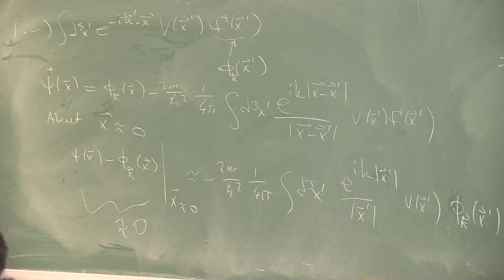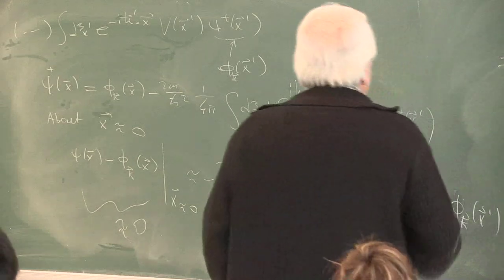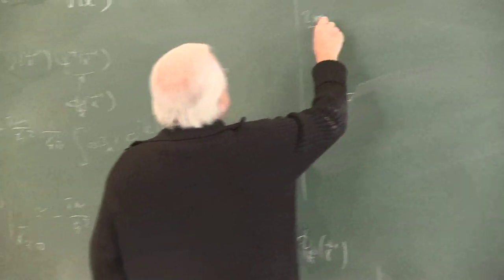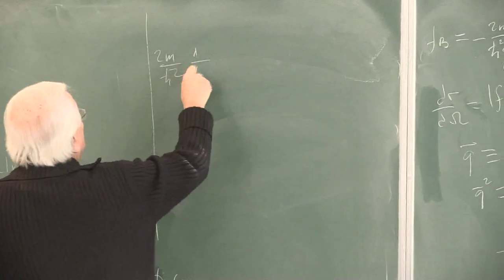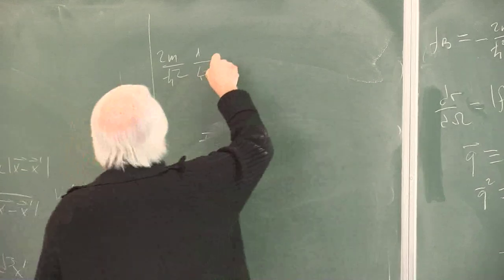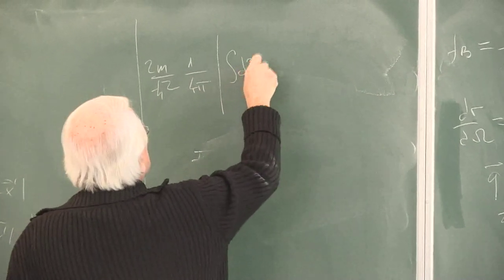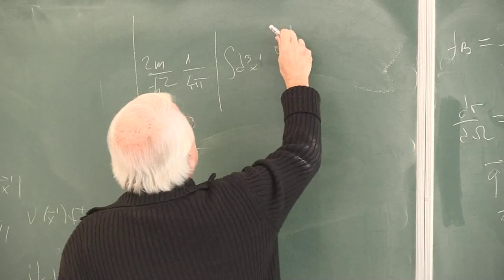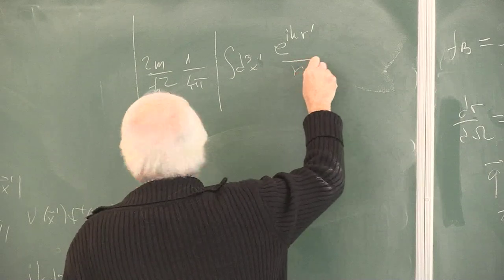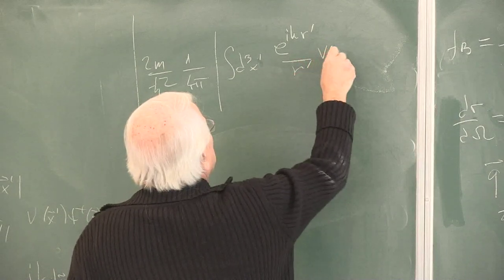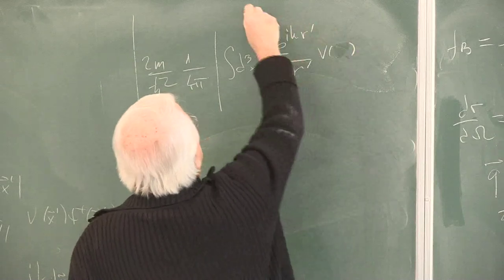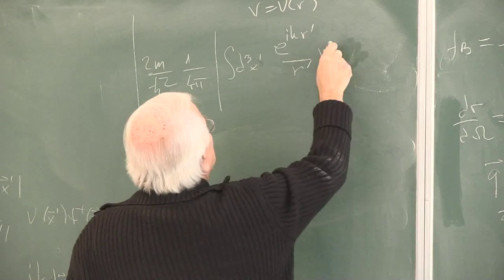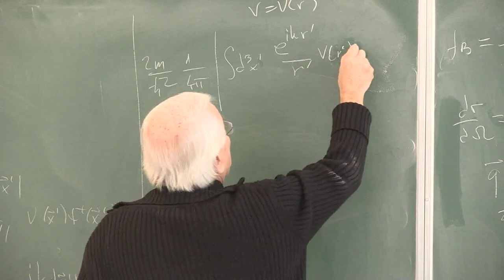So let me write this as follows. If I express it as a mathematical statement, meaning (2m over h-bar squared)(1 over 4pi), the magnitude of d-cubed x-prime, e to the ikr-prime divided by r-prime, times v of x-prime — now think of the spherically symmetric case — v of r-prime times phi_k. So it is e to the ikx-prime divided by (2pi) to the 3-halves.